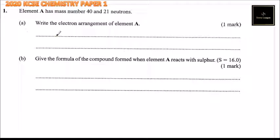Element A has a mass number 40 and 21 neutrons. Part A: Write the electron arrangement of element A.